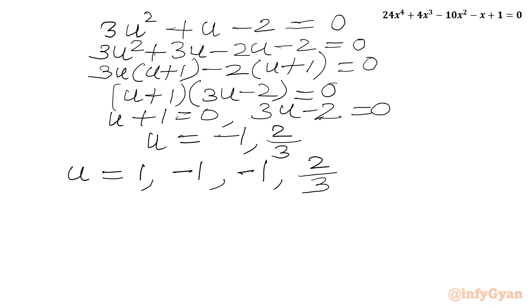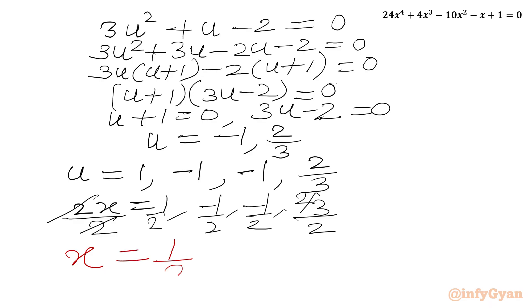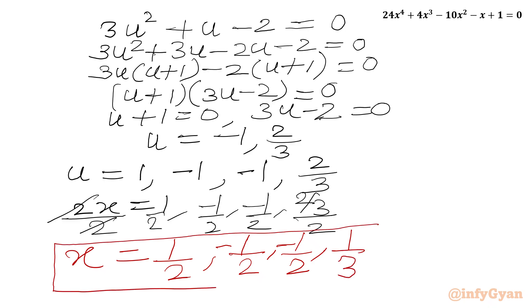Now u was our substitution where 2x equals u. So 2x equals 1, minus 1, minus 1, and 2 over 3. Dividing both sides by 2, we get our final answers: x equal to 1 over 2, minus 1 over 2, minus 1 over 2 (with multiplicity 2), and 1 over 3. We have overall 4 real solutions: 1/2, minus 1/2, minus 1/2, and 1/3. This is our method number 1.